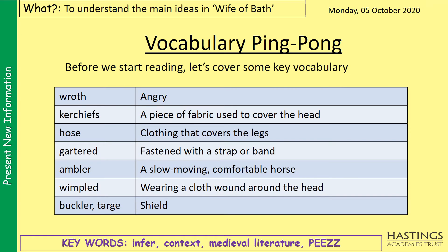Now we can't start reading without understanding some of the key vocabulary from the Wife of Bath. So before we start reading, make sure you understand these key terms: 'roth' means angry; 'kerchiefs' is a piece of fabric used to cover the head; 'hose' is clothing that covers the legs; 'gartered' means fastened with a strap or band; 'ambler' is a slow-moving, comfortable horse; 'wimpled' means wearing a cloth wound around the head; and a 'buckler' or 'taj' is a shield. Make sure you understand those before we move on — pause the video and write them down if you have to.